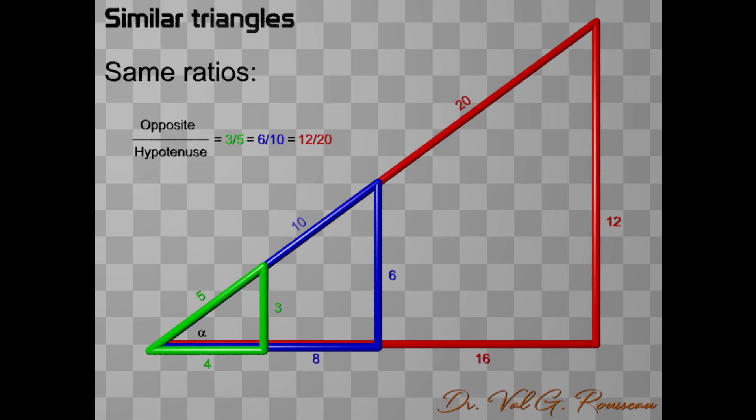So this ratio is the same for the three triangles. In a similar way, we can easily check that the ratio between adjacent and hypotenuse simplifies to 4 over 5 for the three triangles. And it also works for the ratio between opposite and adjacent, which we find that it simplifies to 3 over 4.